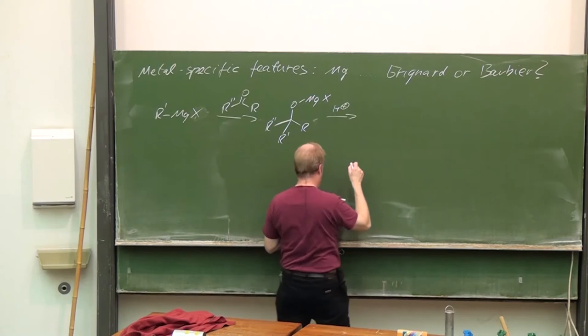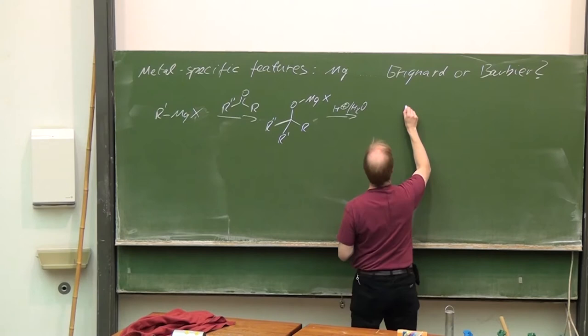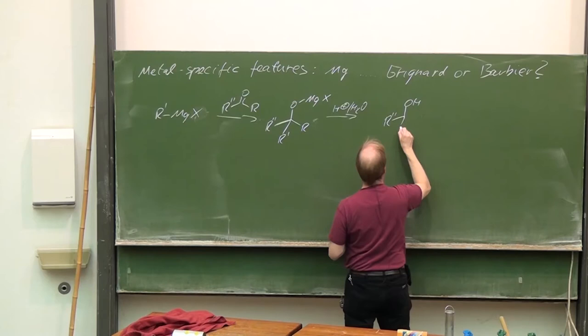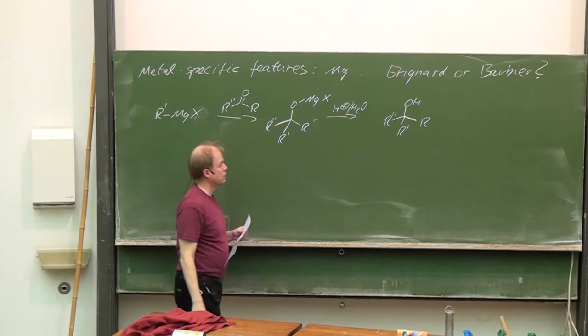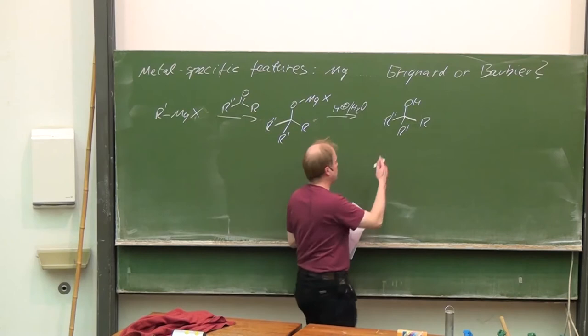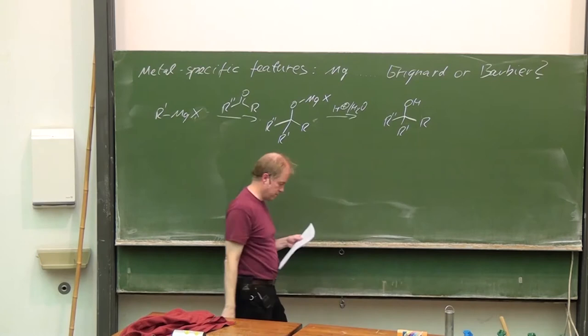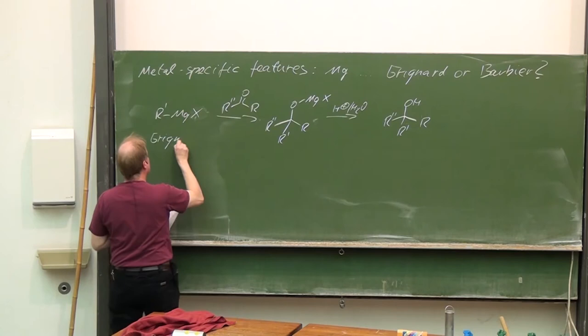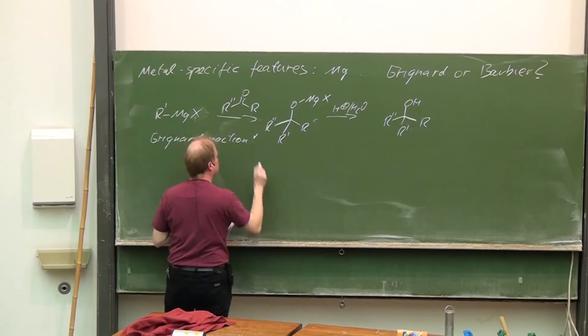A 1,2-addition reaction to the carbonyl group occurs, forming the alcoholate. After cautious hydrolysis, we end up with a tertiary, secondary, or primary alcohol. This is the Grignard reaction.